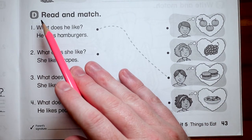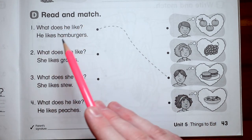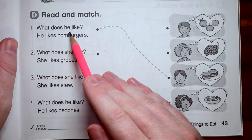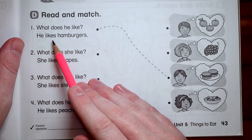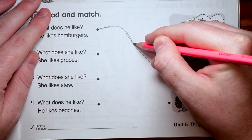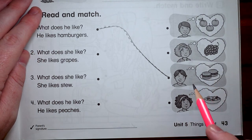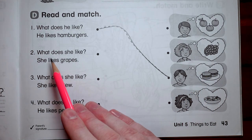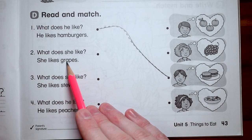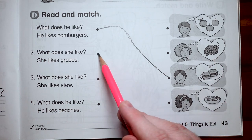Okay. And this is part D and it just says read and match. So we can just read the question and then match it to the picture. Here we go. What does he like? He likes hamburgers. Me too. I love this unit, but every time I teach it, it makes me very hungry. Next one. What does she like? She likes grapes. Well, grapes are there, right there. Some grapes. Draw a line over to there.